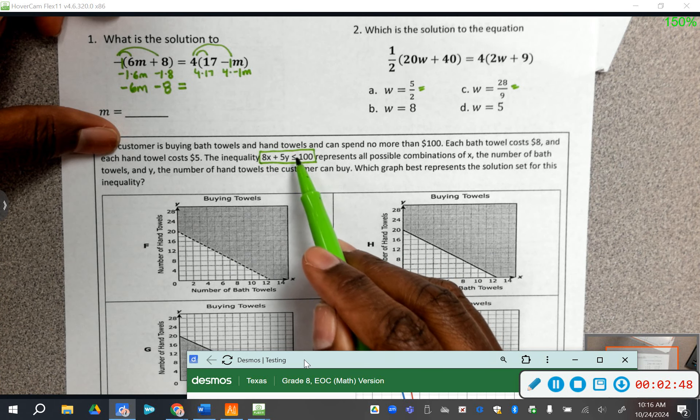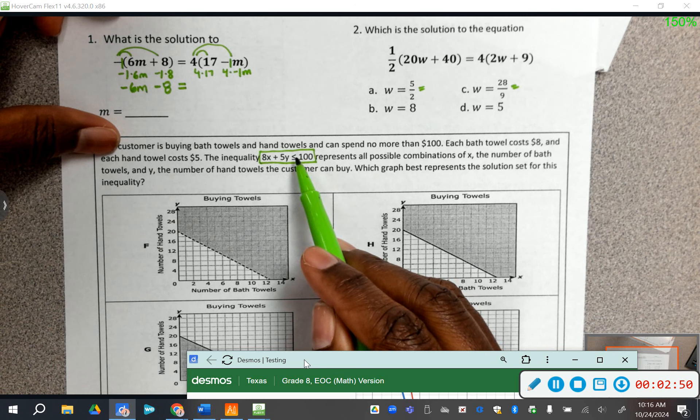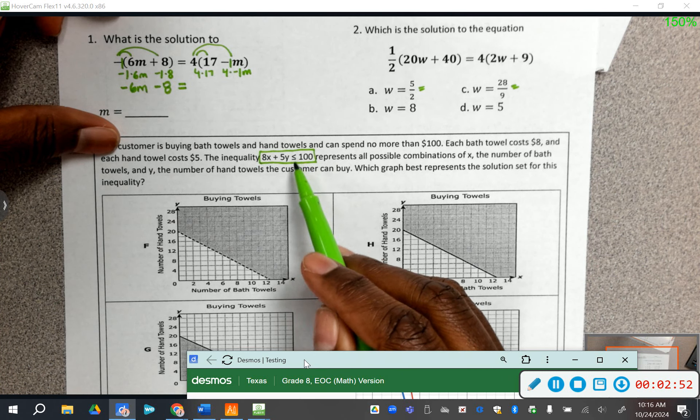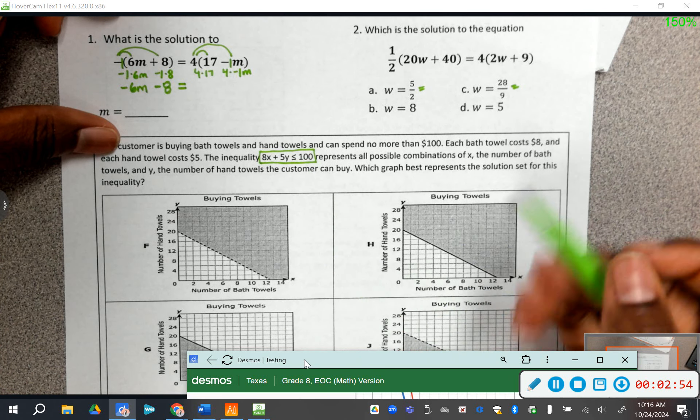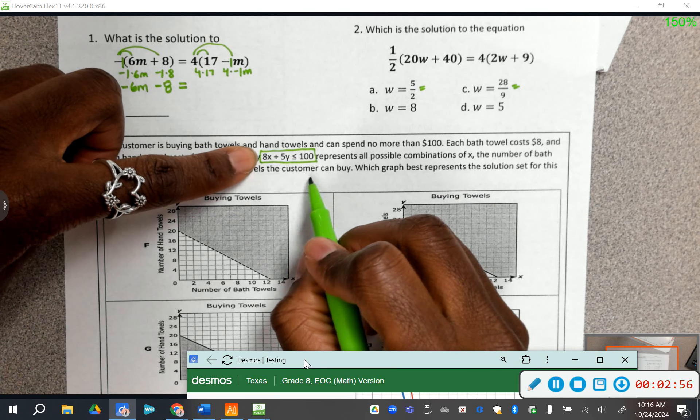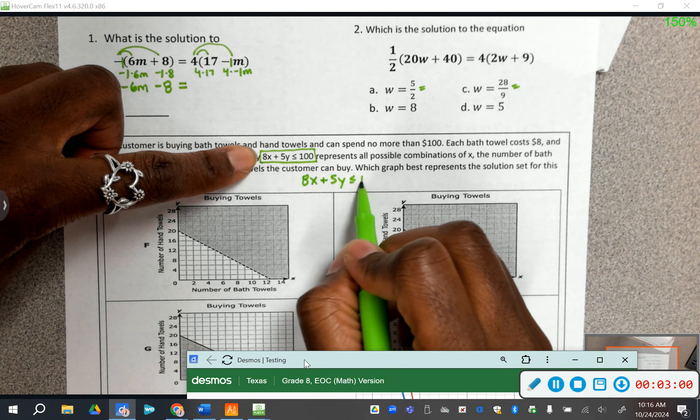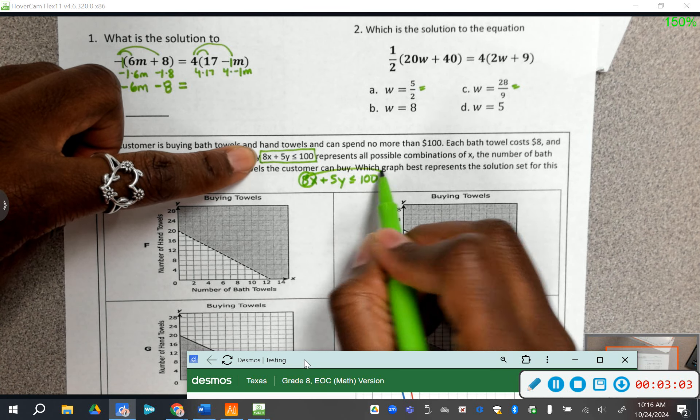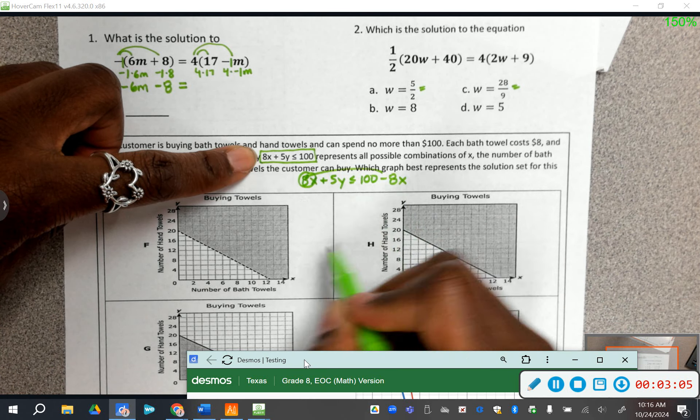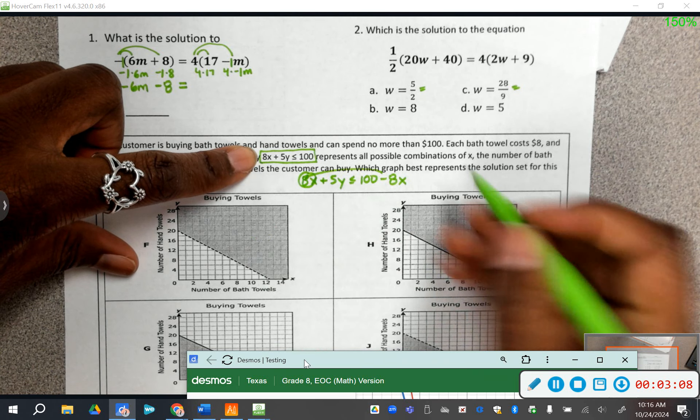I hope you noticed that this inequality is in stupid standard form, so we can't tell anything. You really can't even tell which symbol it is, because remember, if you have to divide by a negative, that means that your symbol is going to flip. So we're going to have to work this out.